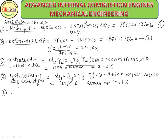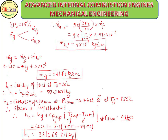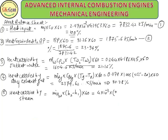Fifth, heat carried by steam = m_H₂O × (H2 − H1) × 60 = 4.0 × 10⁻³ × (3216.68 − 83.9) × 60 = 753.75 kJ/min. Percentage = 9.62%.